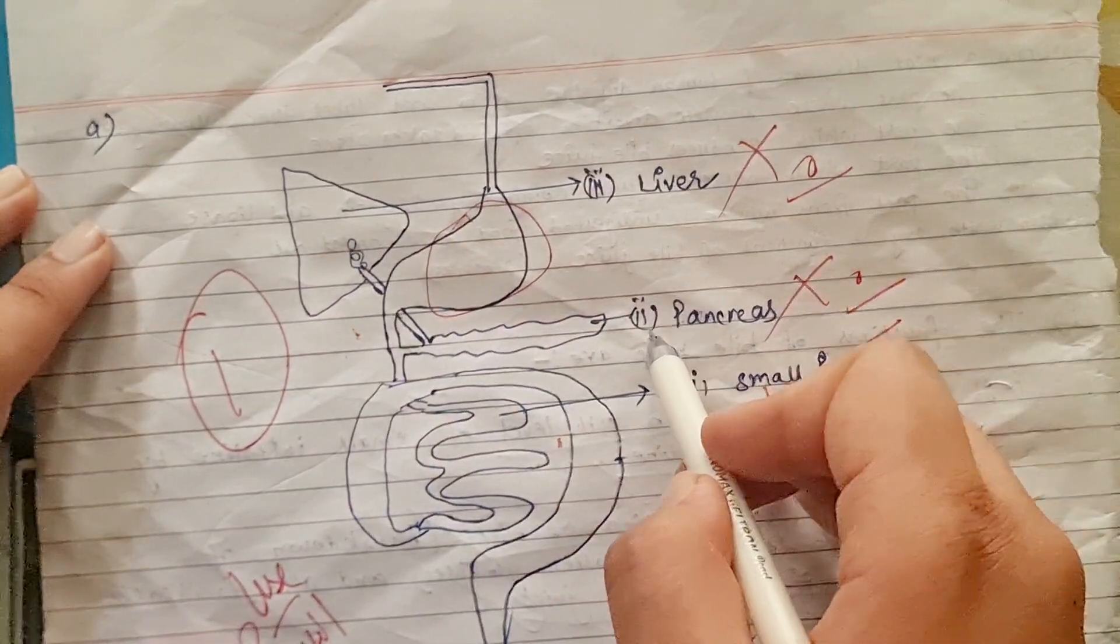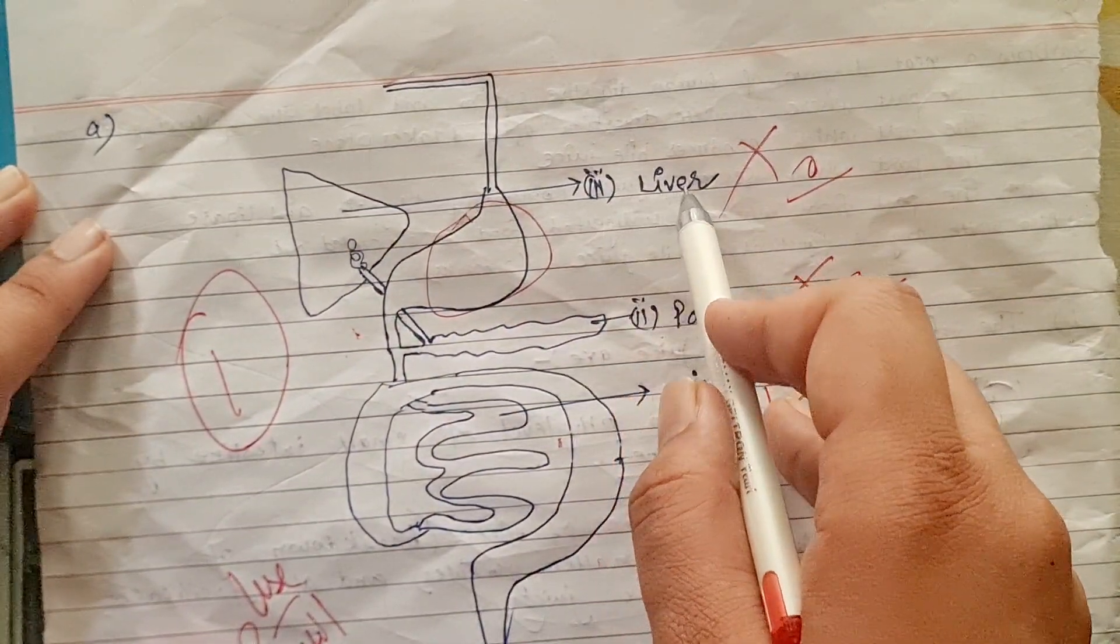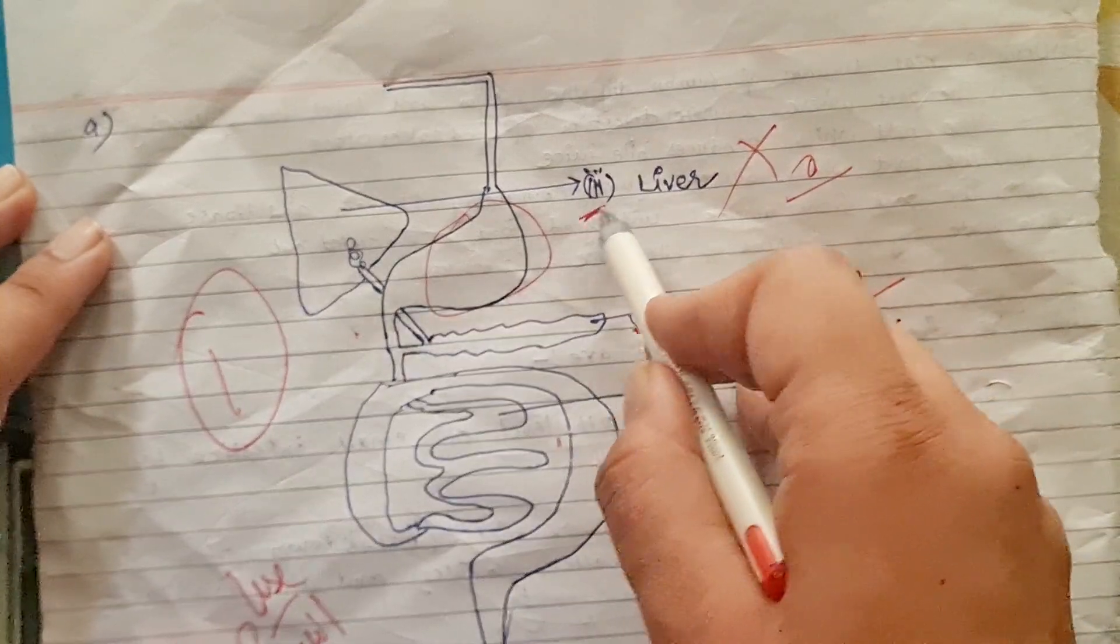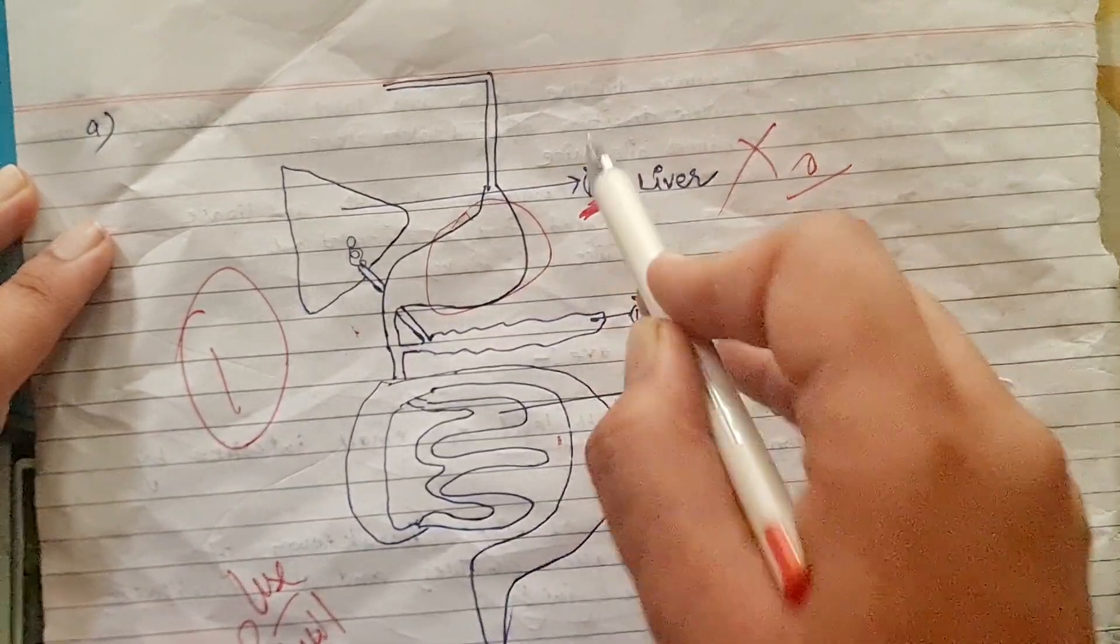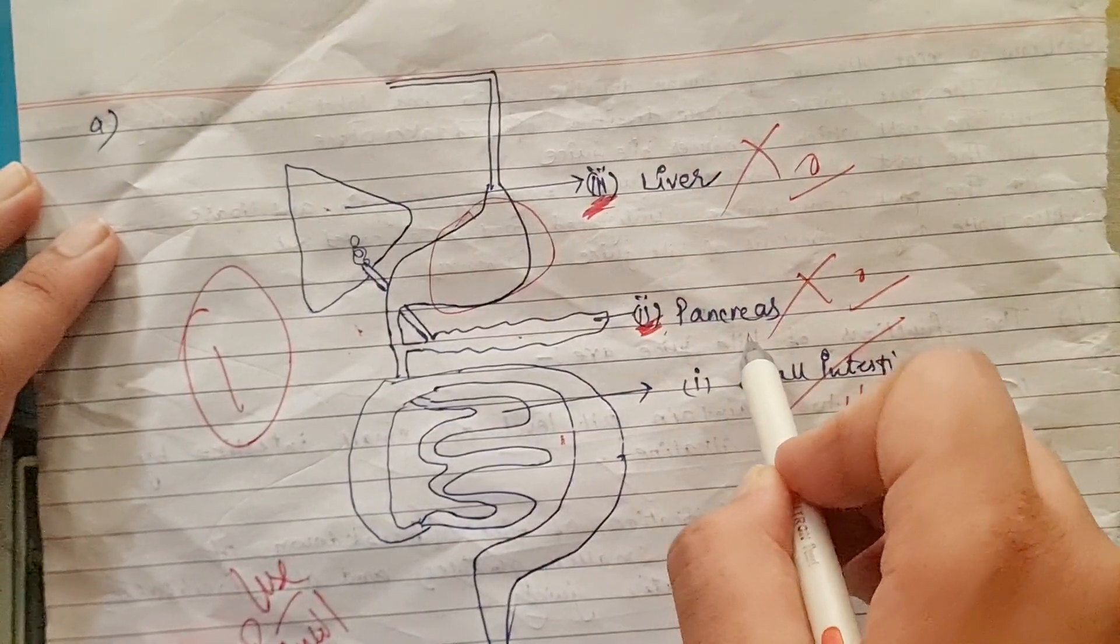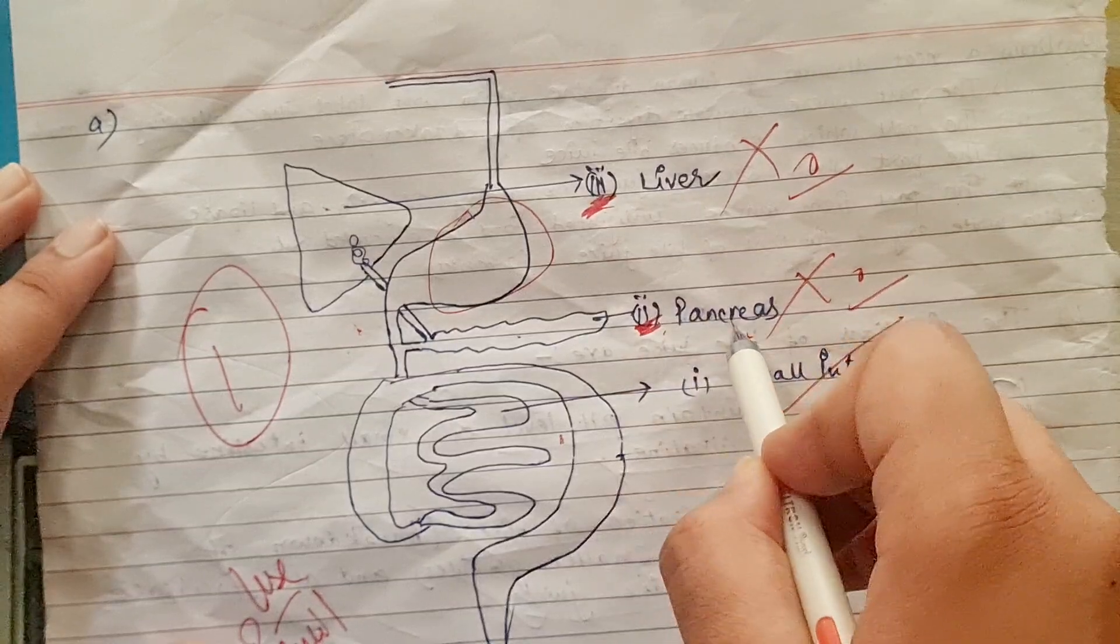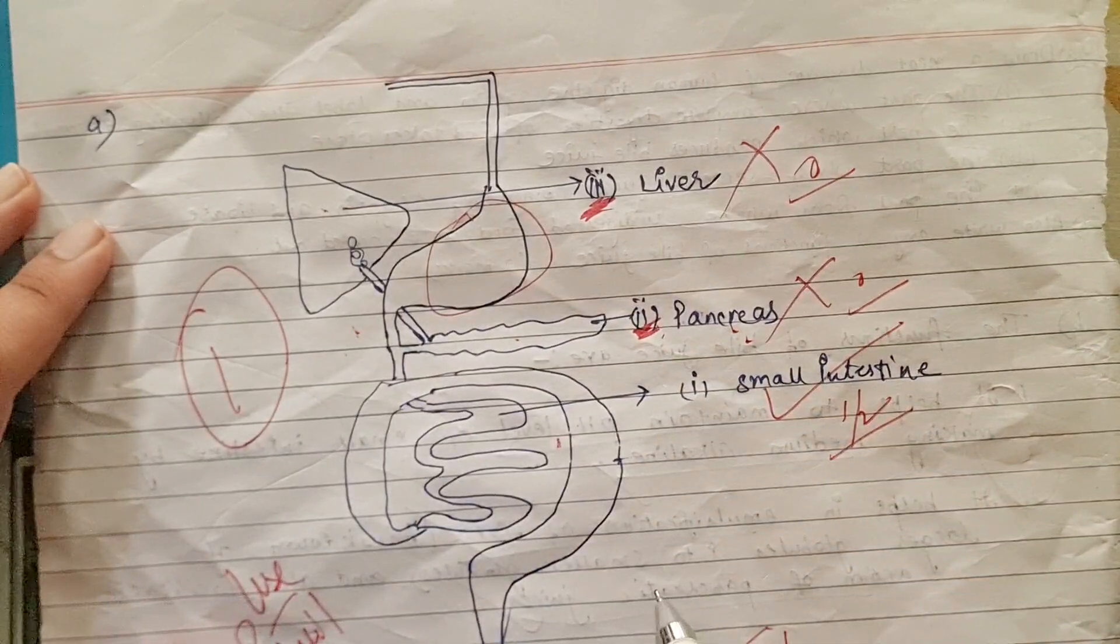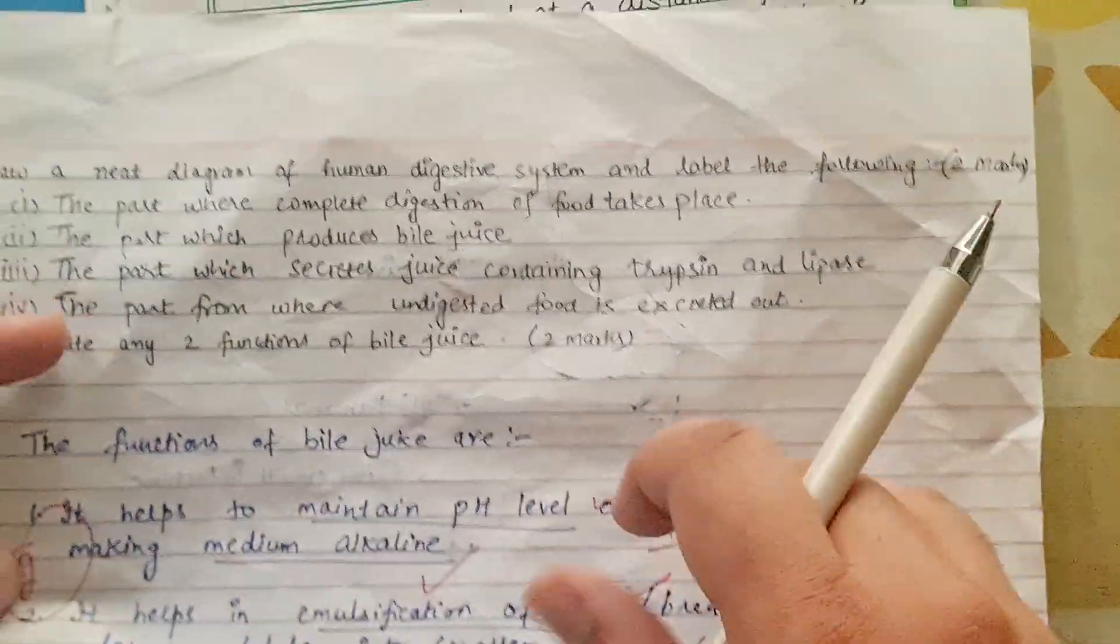The whole question will get one mark here. The third part answer is pancreas. Labels are correct but the second and third parts are wrong. This is the label: liver, this is pancreas. But the second part answer is pancreas, not the third part, so it is wrong. This is why the student lost one mark. This is a 4 marker question, so total the student got 3 out of 4.